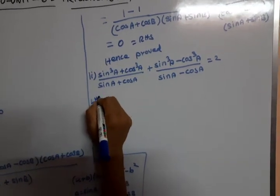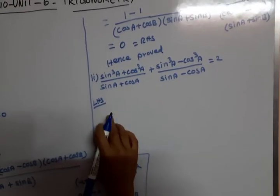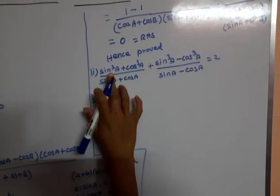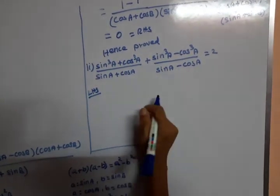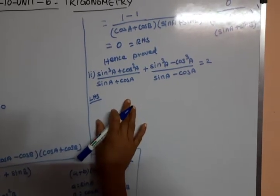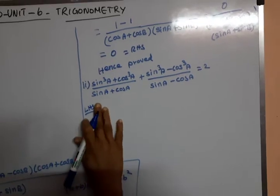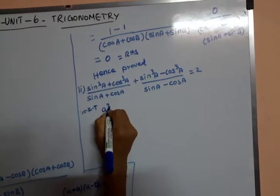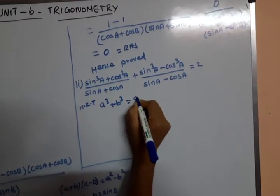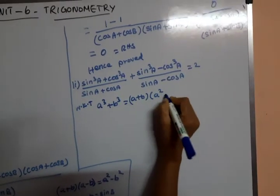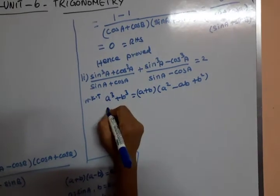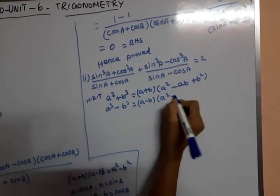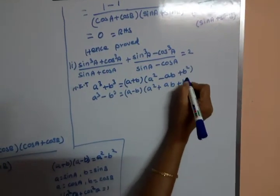We take LHS. Looking at sin³A plus cos³A, this is a cube plus b cube form. We apply the identity: a³ plus b³ equals (a plus b)(a² minus ab plus b²), and a³ minus b³ equals (a minus b)(a² plus ab + b²).